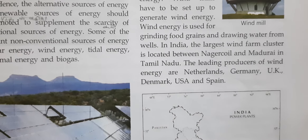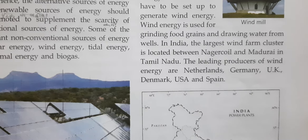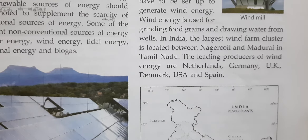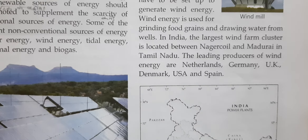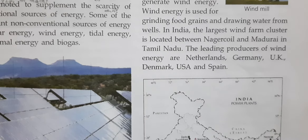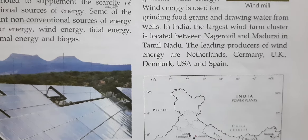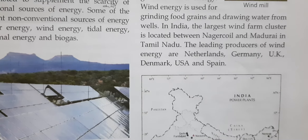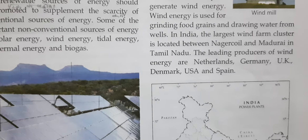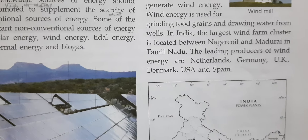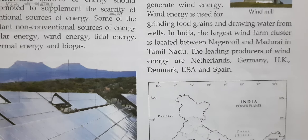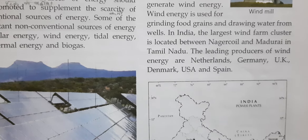Wind energy is used for grinding food grains and drawing water from wells in India. The largest wind farm cluster is located between Nagercoil and Madurai in Tamil Nadu. The leading producers of wind energy are Netherlands, Germany, UK, Denmark, USA, and Spain.